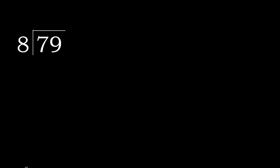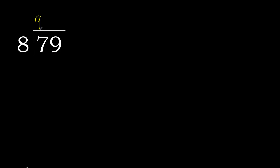79 divided by 8. 7 is less, therefore next. 79 is not less, therefore with 79: 8 multiplied by which number is nearest to 79 but not greater? 8 multiplied by 9 is 72, which is not greater. 79 minus 72 is 7.